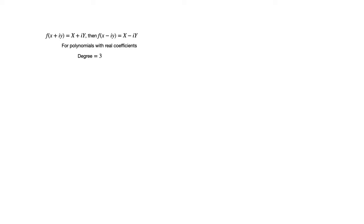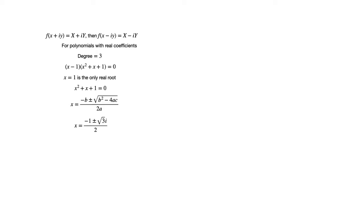This equation has exactly 3 roots. Factoring the left hand side gives two factors, one linear and one quadratic: (x−1)(x²+x+1) = 0. The solution to x−1=0 is x=1, which is the only real root. The solution to x²+x+1=0 yields omega and its conjugate. Interestingly, the conjugate of omega is omega squared. We know that omega · omega² = 1 by the definition of omega as a complex cube root of 1, so omega² equals the reciprocal of omega. Also, omega · its conjugate equals the modulus of omega squared, which equals 1, since omega is a cube root of 1 and lies on the unit circle in the complex plane.